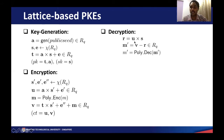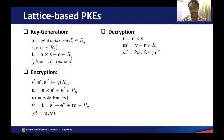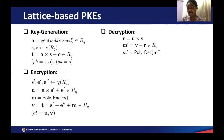In the decryption procedure, we compute the product U times S and subtract this product from the ciphertext component V, which generates the message polynomial but it contains some errors. This erroneous message polynomial is decoded back to the message bit vector using the polynomial decoding function. This scheme is secure in the chosen plaintext model. Since these schemes are based on the LWE or LWR problem, they are associated with a certain decryption failure rate.